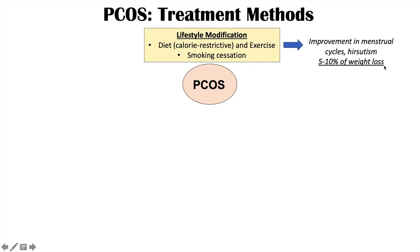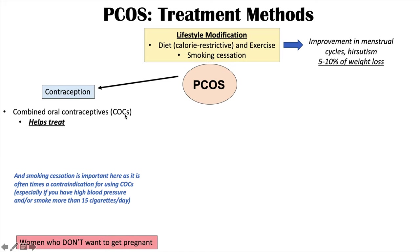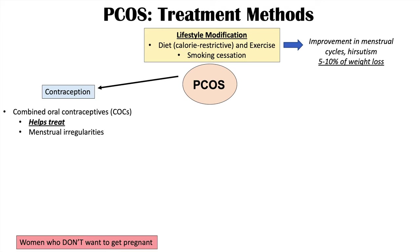After lifestyle modification, we break treatment into subcategories. For women who do not want to get pregnant, the first treatment category is contraception. Combined oral contraceptives, or COCs, are first line. They help treat menstrual irregularities, acne, and hirsutism, and they reduce the risk of endometrial hyperplasia and endometrial cancer by preventing unopposed estrogen and allowing regular menstrual periods to occur.